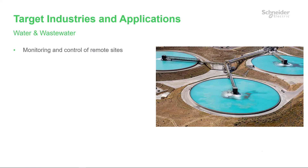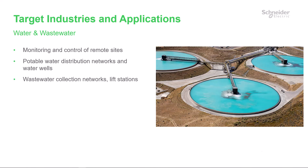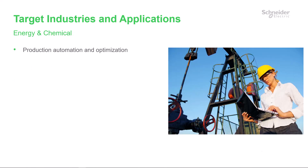The next few slides provide examples of target industries where Aero might be used. Generally, you can use Aero for monitoring and control of remote sites. More specifically: potable water distribution networks and wells, wastewater collection networks including lift stations, irrigation systems, and leakage detection.